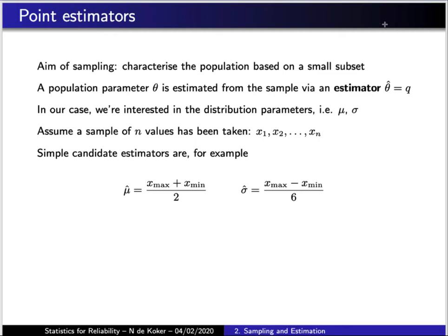In terms of notation we will represent population parameters using Greek letters, so for example using theta. To represent the estimator of that population we will put a little hat on it — theta hat. The next step would be to determine some parameter for the sample, so let's say q, and then use that value to estimate the value of the population parameter by setting it equal to the point estimator. Theta here is a generic parameter, and for our purposes we will be interested in the mean and the standard deviation of the population.